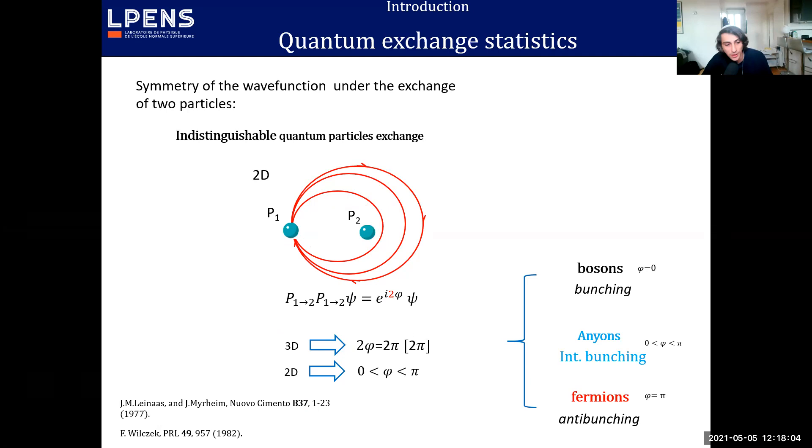After that, in the late 70s, a prediction was made by Leinaas and Myrheim that for systems in reduced space, like two-dimensional or one-dimensional systems, doing twice the operator is no longer identity. And therefore, you have no constraint on the phase. Some extension in this system should have some particles with any phase in between zero and π. And therefore, there should exist some third kind of particle with intermediate behavior, with intermediate bunching behavior between fermion and boson. So the term anyon was coined by Frank Wilczek a few years after to reflect this any phase factor.